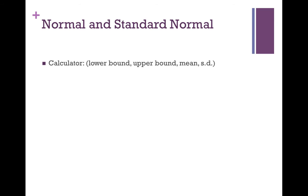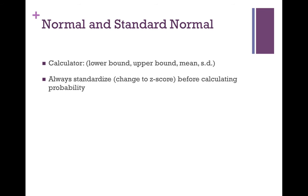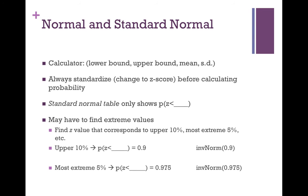The last topic in this chapter is the normal and standard normal distribution. In your calculator, use normalcdf with a lower bound, upper bound, mean, and standard deviation. When the lower bound is negative infinity, use negative 1 times 10 to the 99th. Anytime you calculate a probability using the normal distribution, standardize — convert your value to a z-score — and then use normalcdf or the table. When you standardize, your mean and standard deviation become 0 and 1. The standard normal table shows only lower probabilities; the calculator is often more efficient.